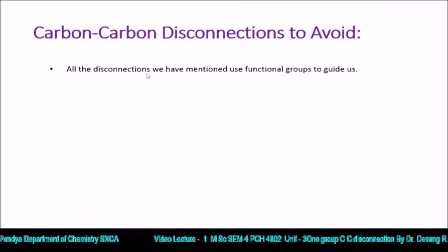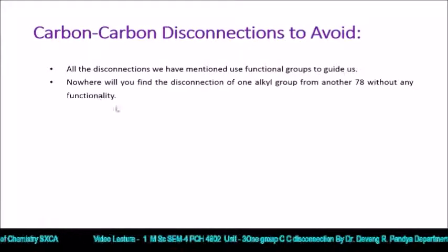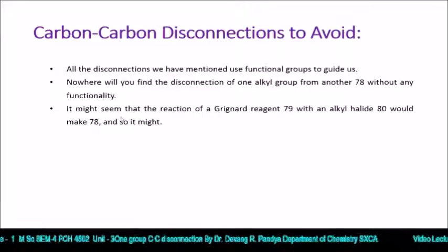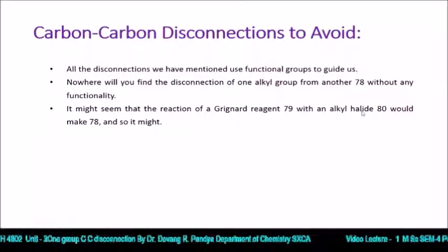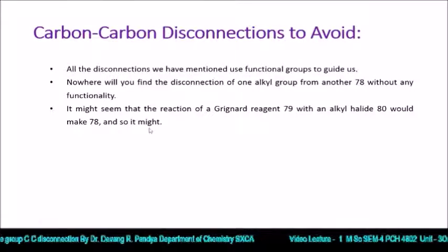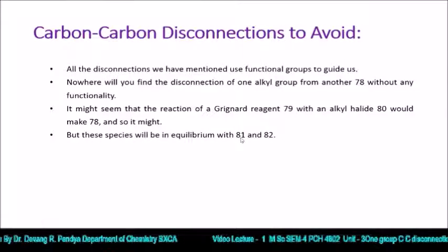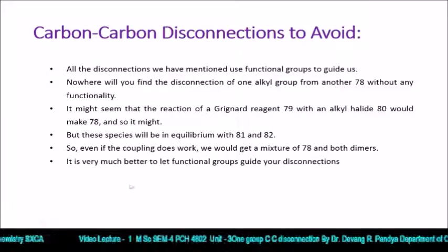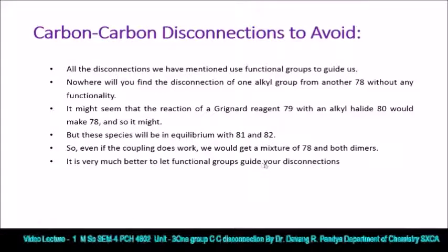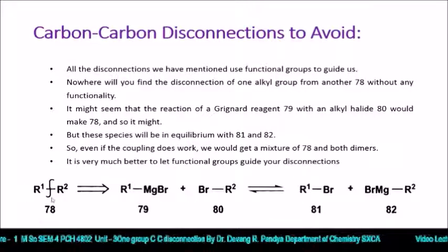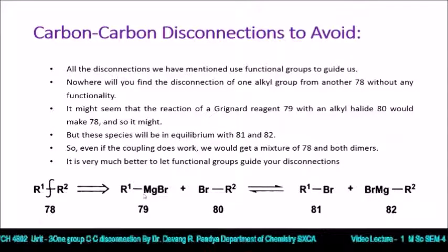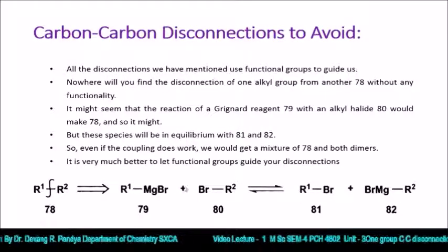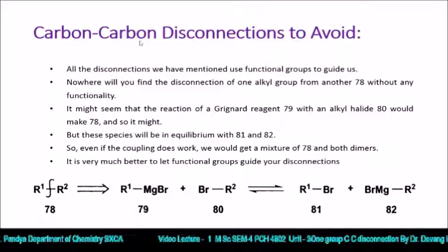All the disconnections mentioned use a functional group to guide us. You will never find a disconnection of one alkyl group from another without any functionality. It might seem that the reaction of a Grignard reagent with an alkyl halide would make molecule 78, but this species would be in equilibrium with molecules 81 and 82, so even if the coupling works, you would get a mixture of dimers 78 and its isomers. It is much better to let functional groups guide your disconnections — CC disconnection without functional groups is to be avoided.